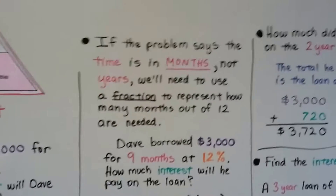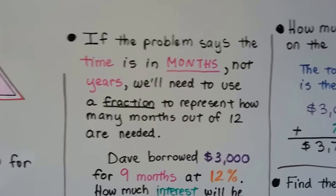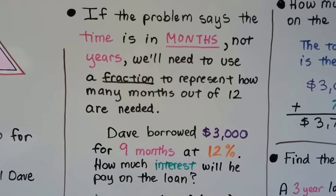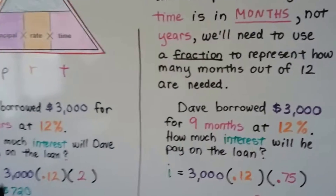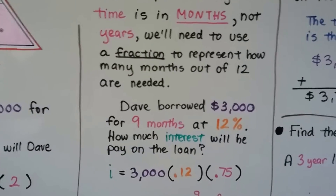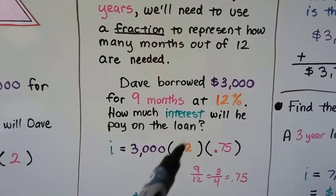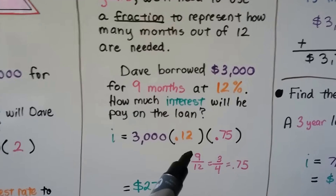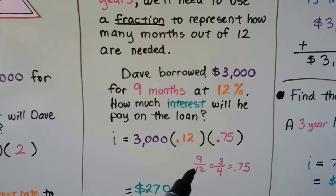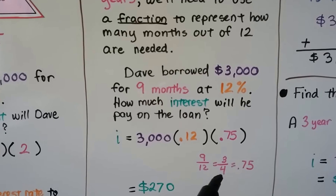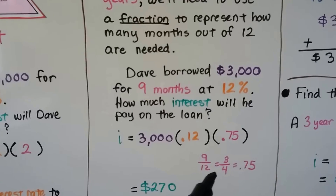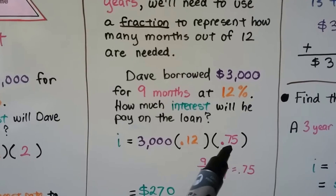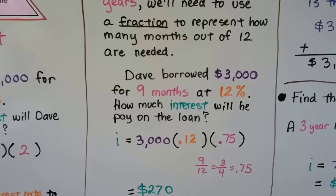If the problem says the time is in months, not years, we'll need to use a fraction to represent how many months out of 12 are needed. If Dave borrowed $3,000 for nine months at 12%, we still change 12% into 0.12, but now nine months is really nine out of 12 months — nine months out of the year. That simplifies to three-fourths, which is 0.75. The months are written as a fraction and then converted to decimal form.